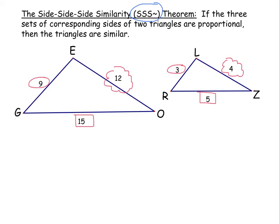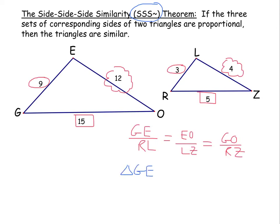Triangle RLZ gets scaled up by a factor of 3 to form triangle GEO, or vice versa. So the three sets of corresponding sides are proportional: GE to RL equals EO to LZ equals GO to RZ. Our similarity statement is triangle GEO is similar to triangle RLZ, by the side-side-side similarity theorem.